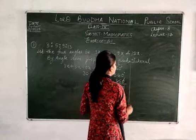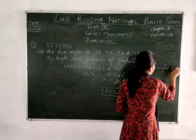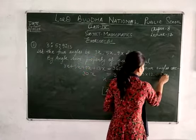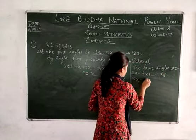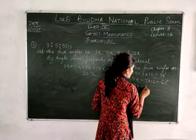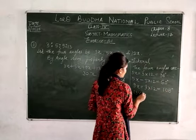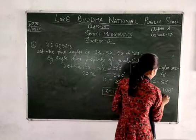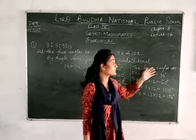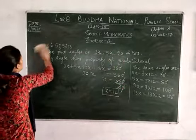Now we have the value of x. The four angles are: first angle 3x = 3 × 12 = 36 degrees; second angle 5x = 5 × 12 = 60 degrees; third angle 9x = 9 × 12 = 108 degrees; and the last angle 13x = 13 × 12 = 156 degrees. So the four angles of the quadrilateral are 36°, 60°, 108°, and 156°. This is the solution for question number 1.